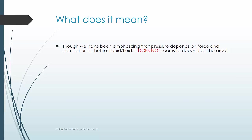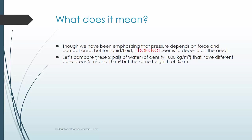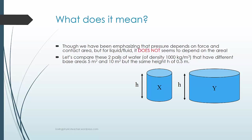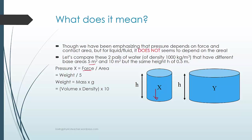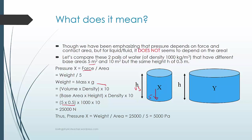Though pressure depends on both force and contact area, for fluids it doesn't seem so. Comparing two pails with base areas of 5 m² and 10 m² but the same height of 0.5 m: the weight for pail X is 5 × 0.5 × 1000 × 10 = 25,000 N, giving pressure 25,000 ÷ 5 = 5,000 Pa.